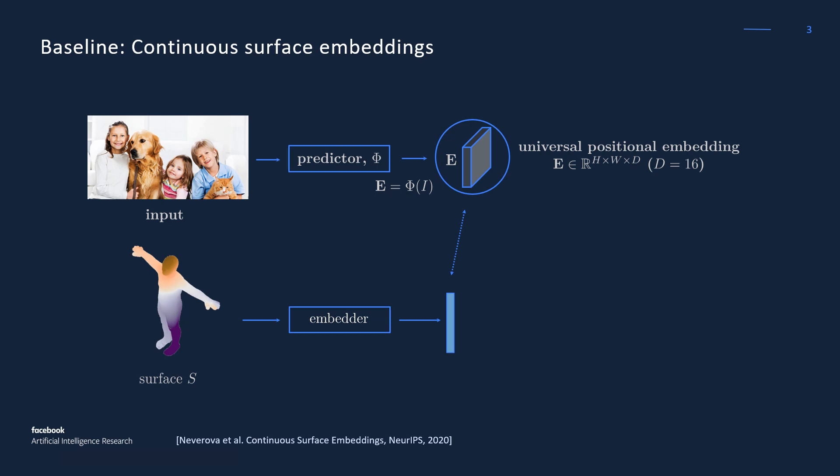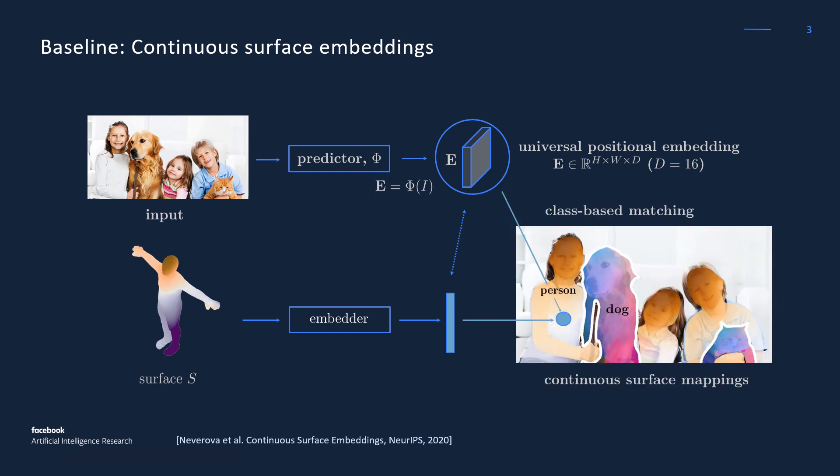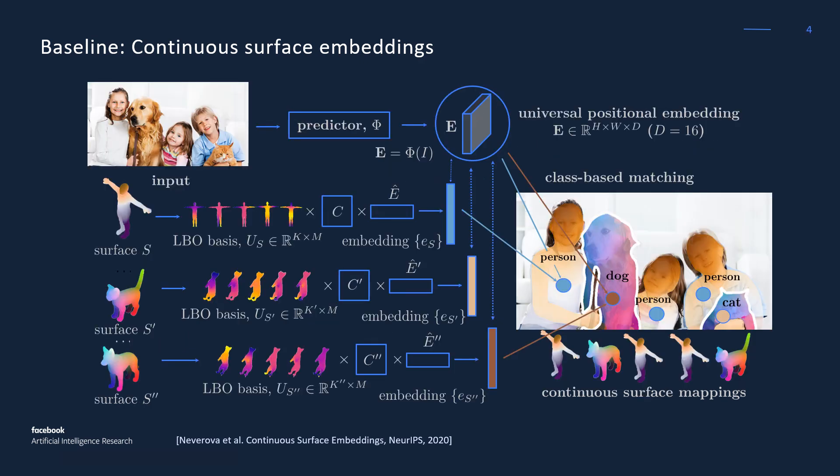Let's consider a state-of-the-art method, Continuous Surface Embeddings, which we use as our baseline. It predicts for each pixel in a 2D image an embedding vector of the corresponding vertex in the object mesh, thereby directly establishing dense correspondences between image pixels and 3D object geometry. This method uses the machinery of functional maps to work with the vertex embeddings of different meshes.